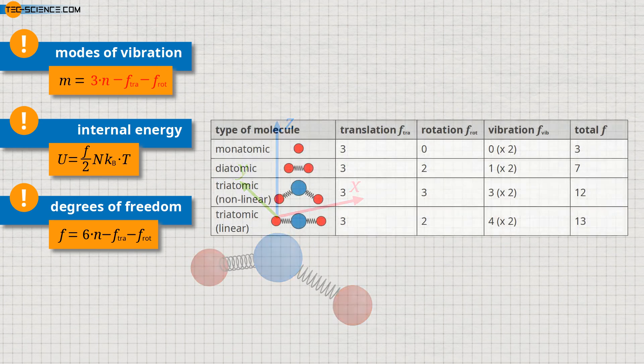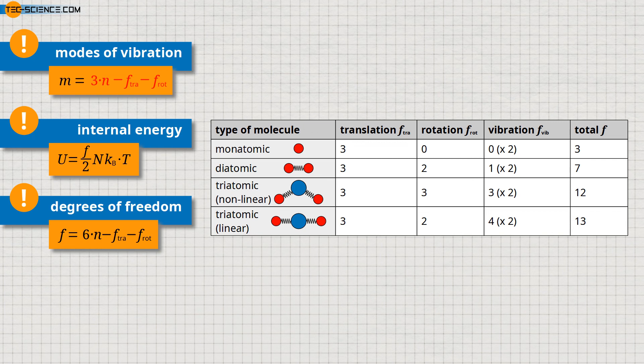A summary table shows the number of degrees of freedom for monatomic, diatomic, and triatomic molecules, illustrating how these values are calculated using the derived relationships.